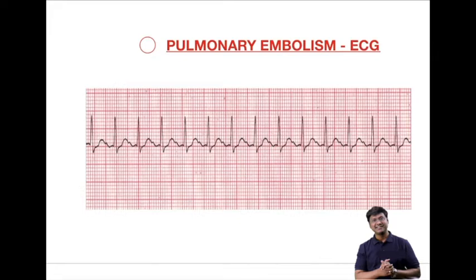This is a very important multiple choice question: what is the most common ECG change in pulmonary embolism? That will be sinus tachycardia — that is the most common ECG change.